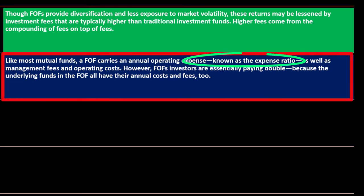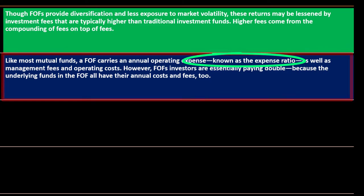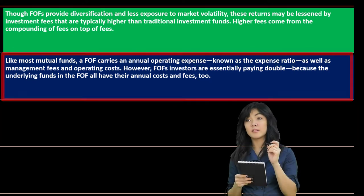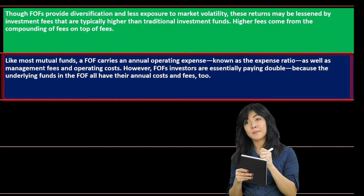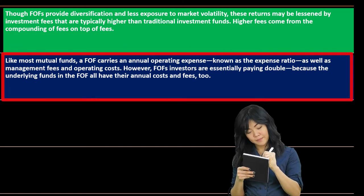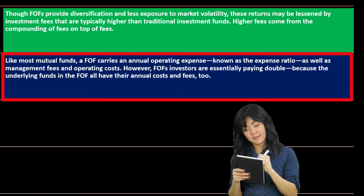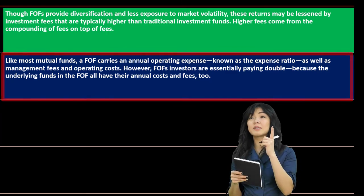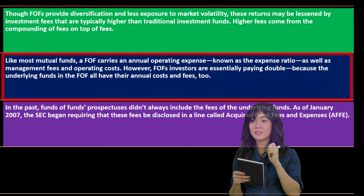Like most mutual funds, FOFs carry an annual operating expense known as the expense ratio — the one to compare to similar types of investments. FOF investors are essentially paying double, because the underlying funds in the FOF all have their own annual costs and fees too.